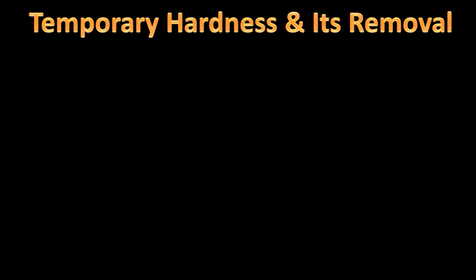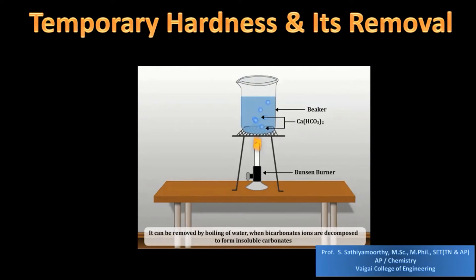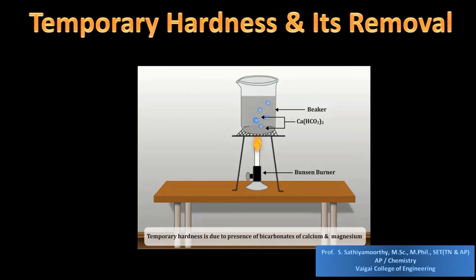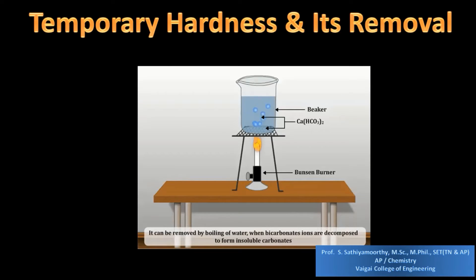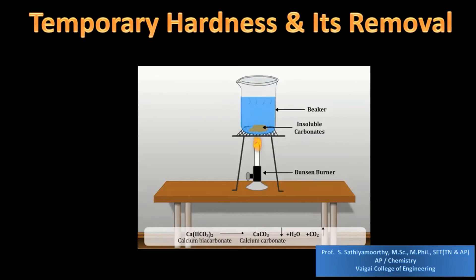Temporary hardness is caused by bicarbonates of calcium and magnesium. Here you can see the image where the salt containing temporary hardness — that is, calcium bicarbonate — is present in the water and it is boiled. As a result, the calcium bicarbonate is decomposed to calcium carbonate along with the formation of carbon dioxide and water. The calcium carbonate which is precipitated can be removed by filtration, and the water is then free from temporary hardness.